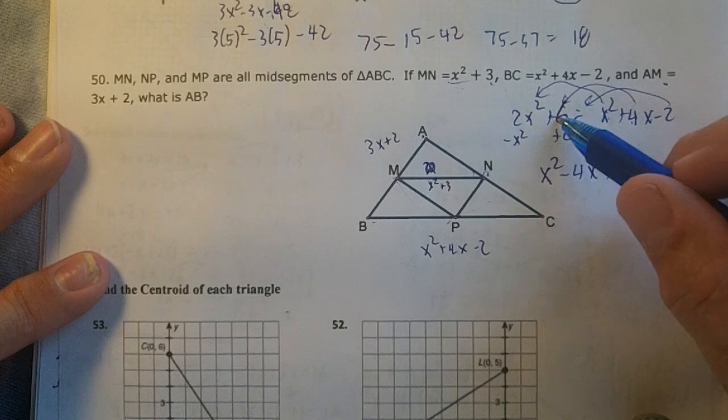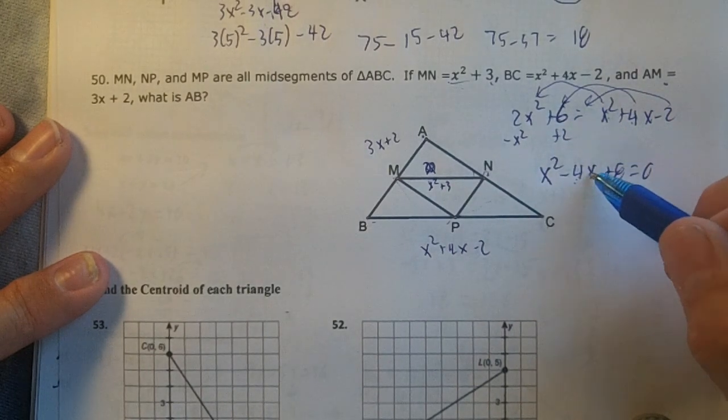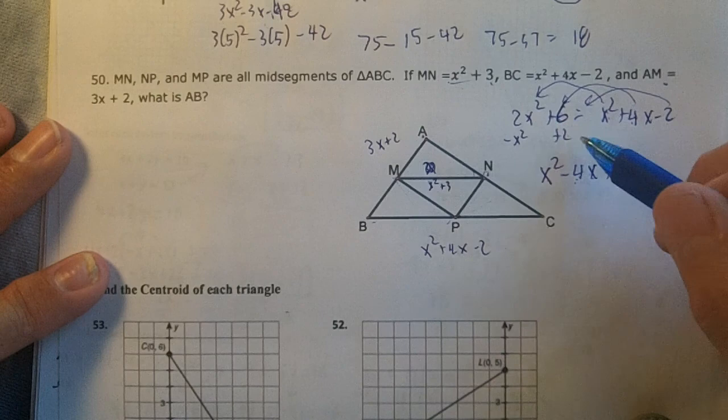The 4x goes over here with nothing to combine, so -4x. Opposite of -2 is +2, and 6 + 2 = 8.